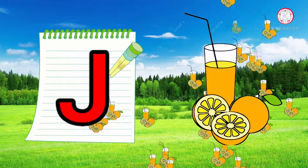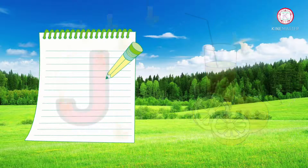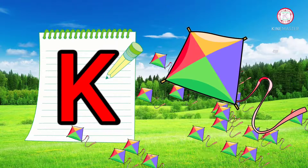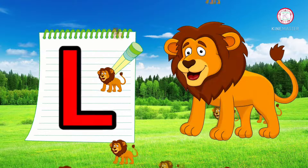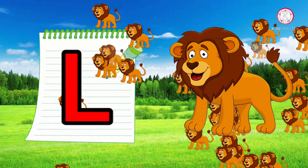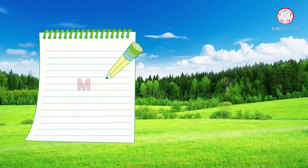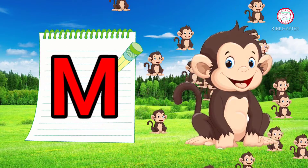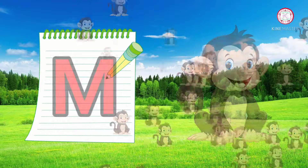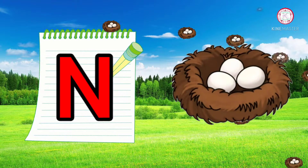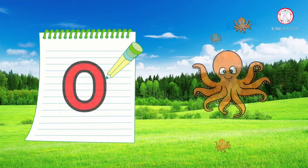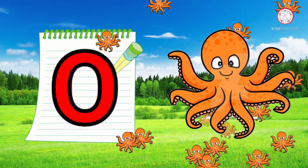J. J for juice. K. K for kite. L. L for lion. M. M for monkey. N. N for nest.